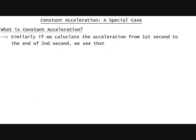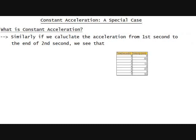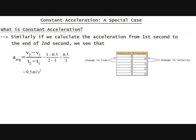Similarly, if we calculate the acceleration from first second to the end of second second, we get A_average = (1 - 0.5)/(2 - 1) = 0.5/1 = 0.5 meters per second squared.